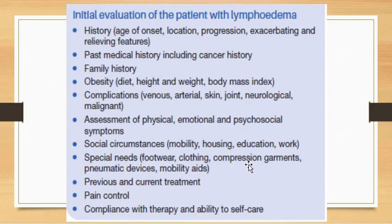Patient evaluation includes history — age of onset, location, progression, exacerbating and relieving features — and past medical history including cancer history, family history, and obesity. Physical, emotional, and psychological symptoms are assessed, along with social circumstances such as mobility, housing, education, and work. Special needs regarding footwear, clothing, and compression garments are also noted, as are previous and current treatments, pain control, compliance, and ability to self-care.